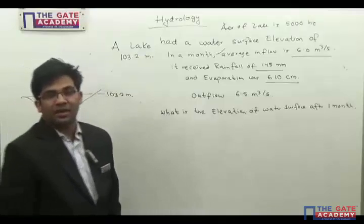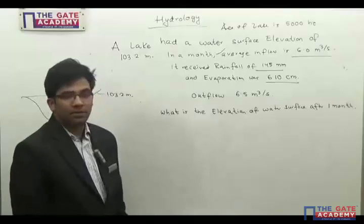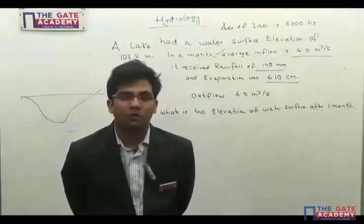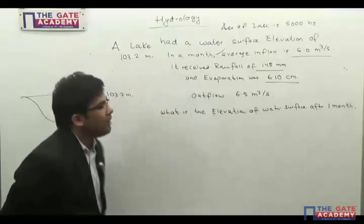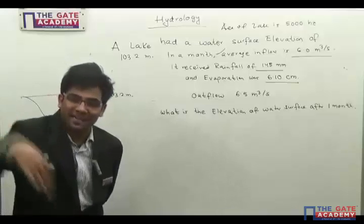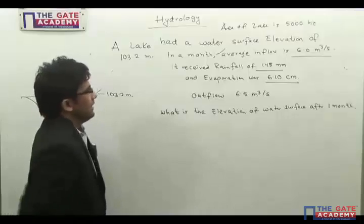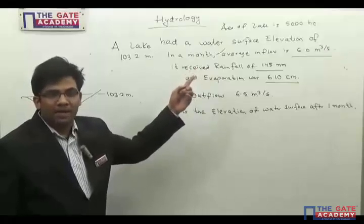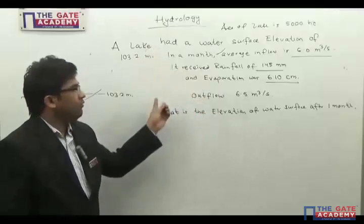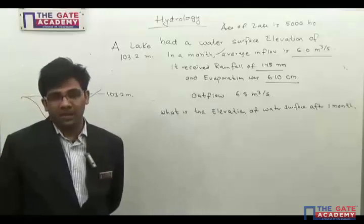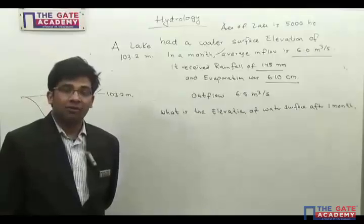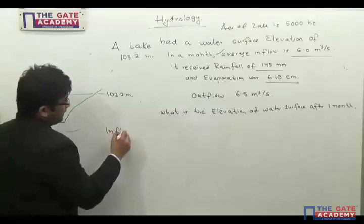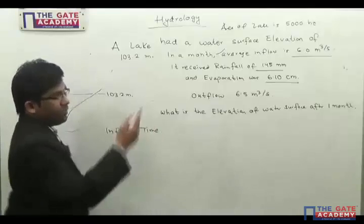Now, which things will contribute to mass inflow? Looking at the water budget equation — mass inflow minus mass outflow equals change in storage — we consider the elements entering the system. The river inflow will enter the system, and by rainfall, water will also enter the system. Evaporation takes water out, and outflow also removes water from the system.